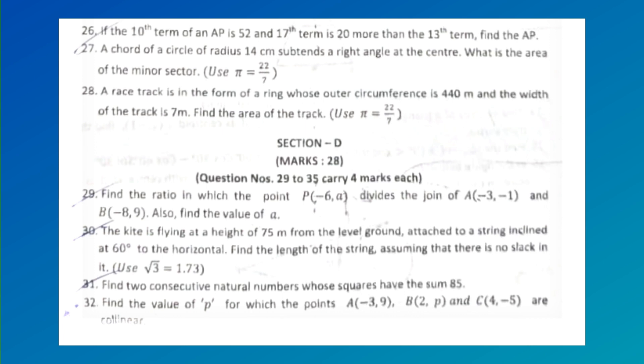A chord of a circle of radius 14 cm subtends a right angle at the center. What is the area of the minor sector? (Use π = 22/7). A race track is in the form of a ring whose outer circumference is 440 meters and the width of the track is 7 meters. Find the area of the track (use π = 22/7).